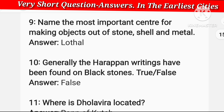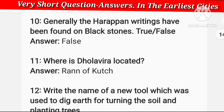Name the most important center for making objects out of stone, shell, and metal. The most important center where objects of stone, shell, and metal were made was Lothal.